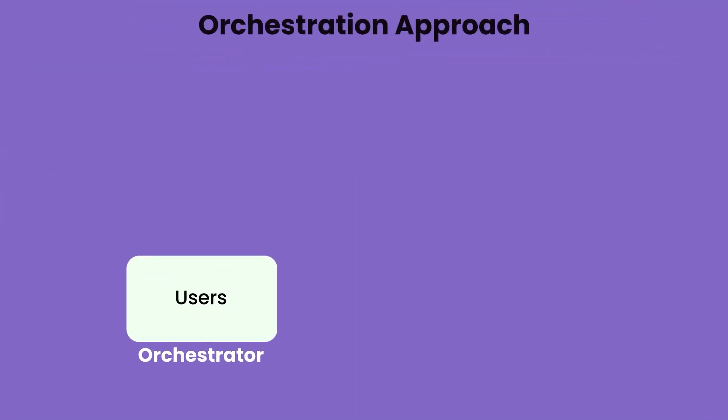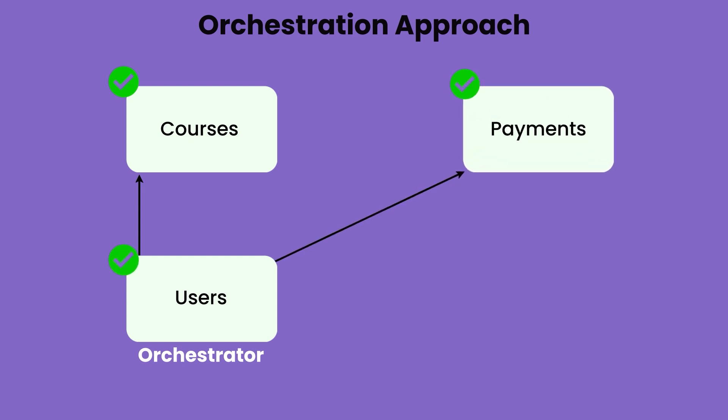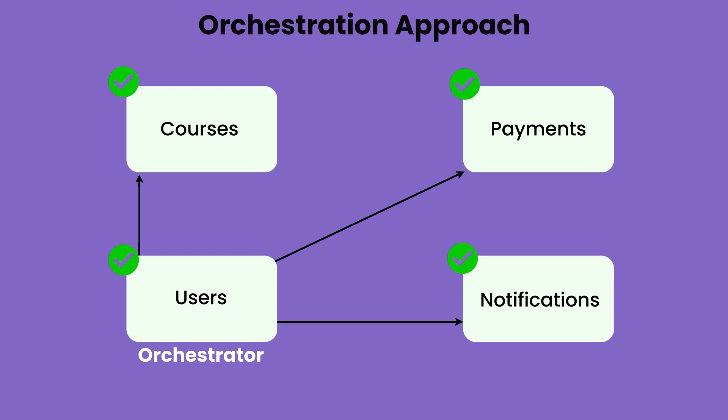These fundamental differences between orchestration and choreography apply to Saga implementations as well. In the orchestration approach, the user service acts as the orchestrator — it asks the courses service to pair the user with courses, takes payment from the payments service, and asks the notification service to send an email. The user service has all the command and control, talking to different services and telling them what to do.